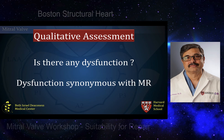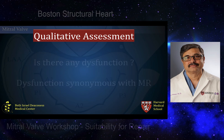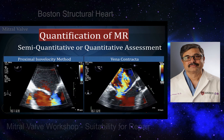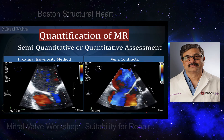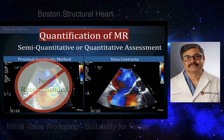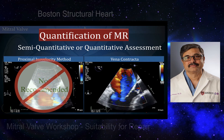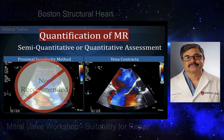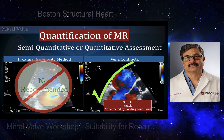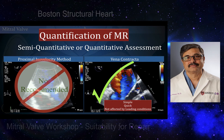After excluding contraindications, step one is a qualitative assessment: is there any dysfunction? Does the patient have significant mitral regurgitation? Because dysfunction is synonymous with mitral regurgitation, quantification of dysfunction is quantification of the severity of MR. We use semi-quantitative or quantitative methods in the operating room. I am biased against the proximal isovelocity surface area method due to its many mathematical assumptions. Therefore, we consistently follow the Wiener-Contractor method, because it is simple, quick, and less affected by loading conditions.